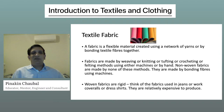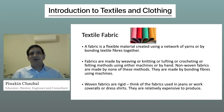Textile fabric. A fabric is a flexible material created using a network of yarns or by bonding textile fibers together. Fabrics are made by weaving, knitting, tufting, crocheting, or felting methods using either machines or by hand. Non-woven fabrics are made by none of these methods — instead they are made by bonding fibers using machines.